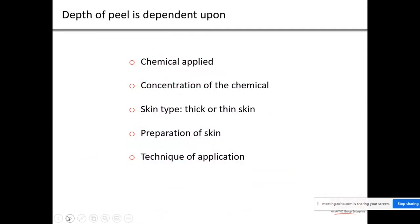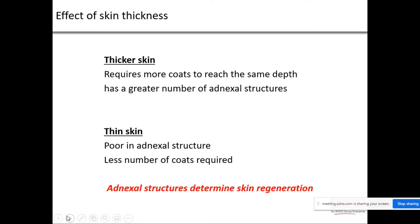The depth of a chemical peel depends on the chemical applied, its concentration, skin type, skin thickness, preparation of the skin, and technique of application. Thicker skin (common in men) has a greater number of adnexal structures that determine skin regeneration and requires more coats to reach the desired depth. Thinner skin has fewer adnexal structures and requires fewer coats.